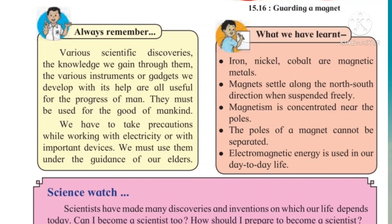Now, what we have learned in this lesson: iron, nickel, and cobalt are magnetic metals. Magnets settle along the north-south direction when suspended freely. Magnetism is concentrated near the poles. The poles of a magnet cannot be separated. Electromagnetic energy is used in our day-to-day life.